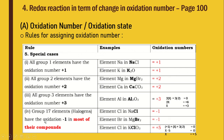For Group 17 — halogens — the oxidation number is −1 in most compounds. For example, chlorine in sodium chloride is −1. All Group 17 elements must receive 1 electron to achieve a stable octet electron arrangement. Chlorine has electron configuration 2,8,7, so it gains 1 electron to become chloride ion Cl⁻, giving oxidation number −1.